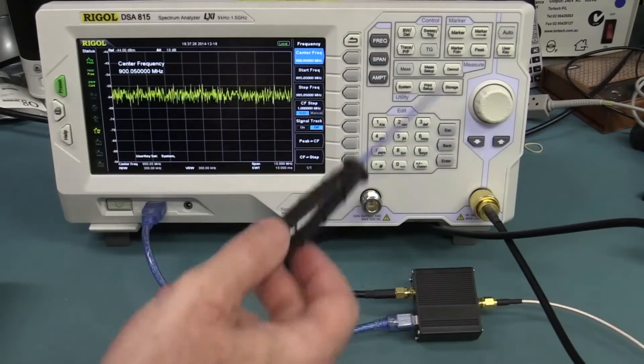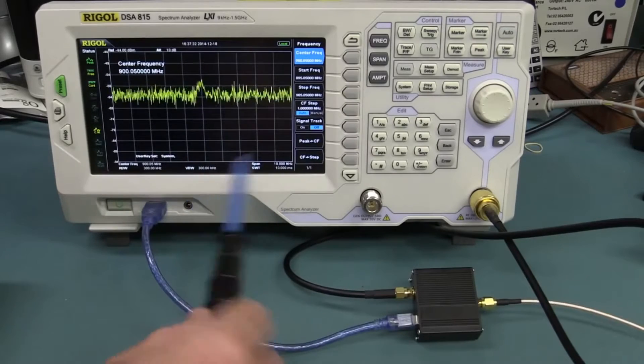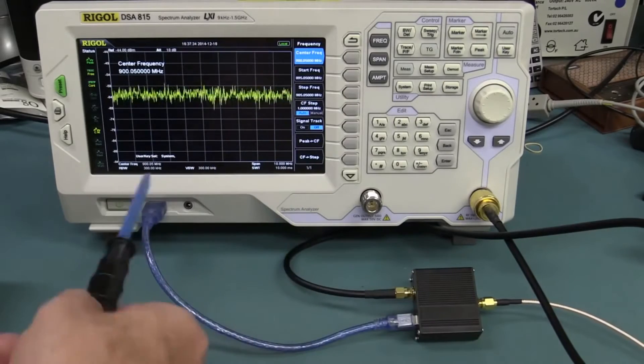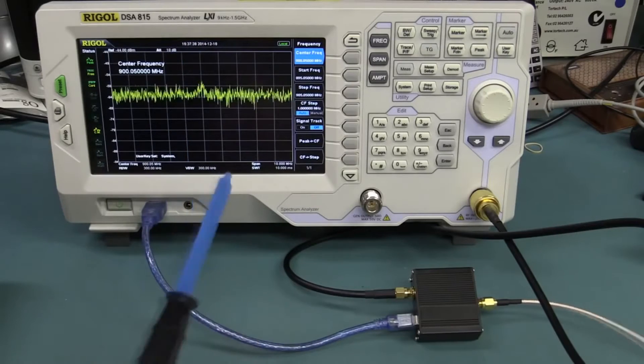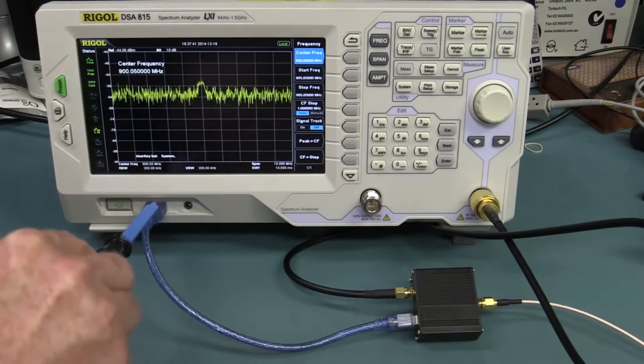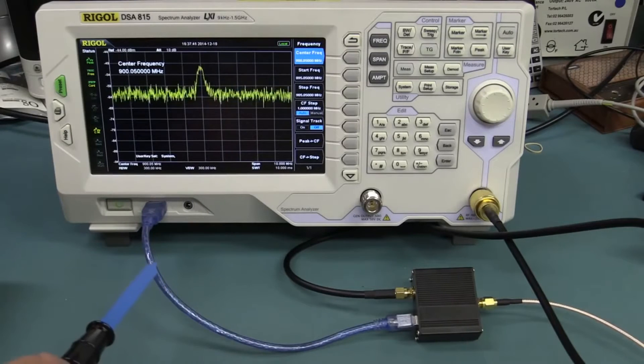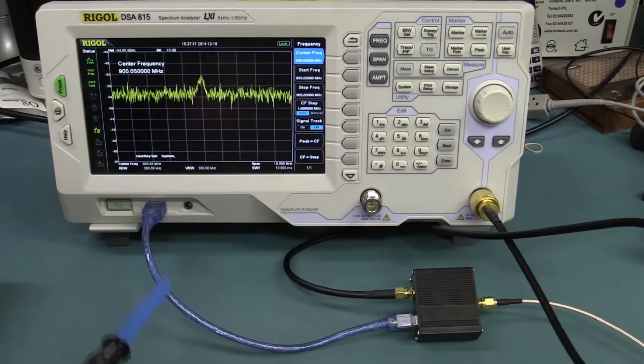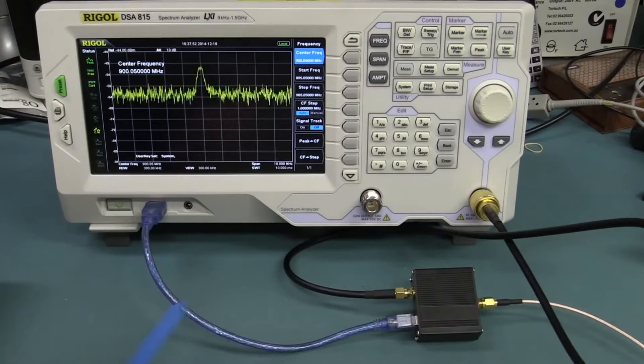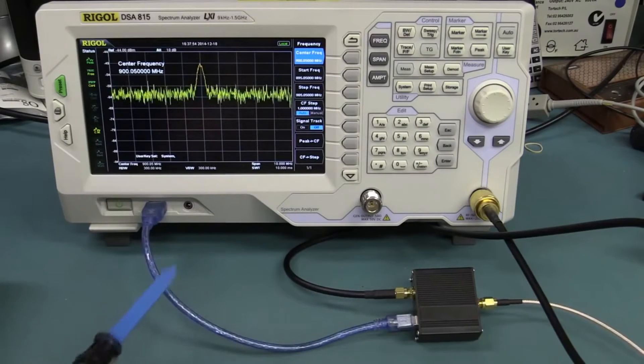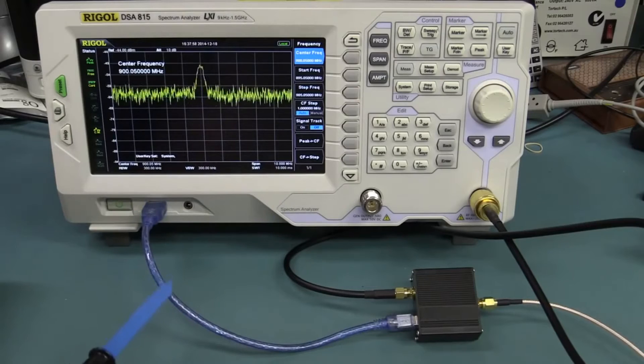And I've got my E-field probe here. And we can probe around and have a look at not a circuit, but just the interconnecting cables and the spectrum analyzer itself. Watch what happens if we put this over our cable here. Look at that. We're picking up something at 900 megahertz. And you see, it has to get very close. This is on the shield of the cable here.